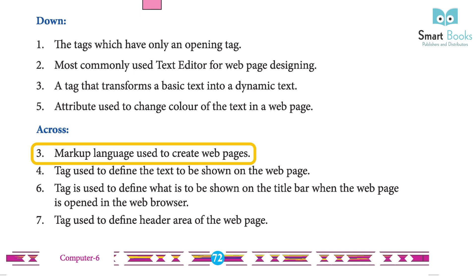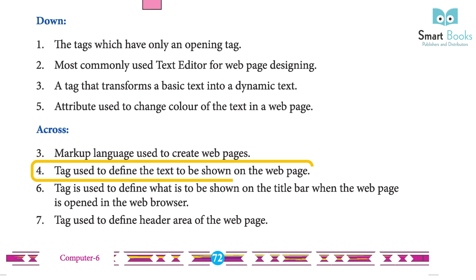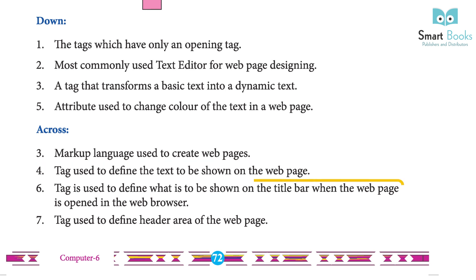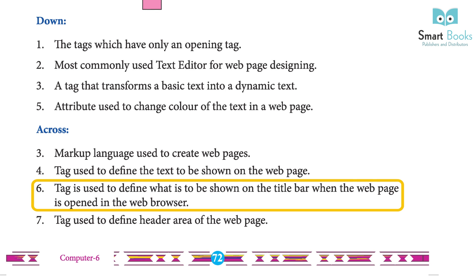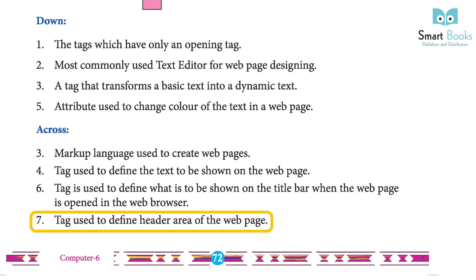Crossword across clues: 3. Markup language used to create web pages – Answer: HTML. 4. Tag used to define the text to be shown on the web page – Answer: Body. 6. Tag used to define what is shown on the title bar when the web page is opened in the browser – Answer: Title. 7. Tag used to define the header area of the web page – Answer: Head.